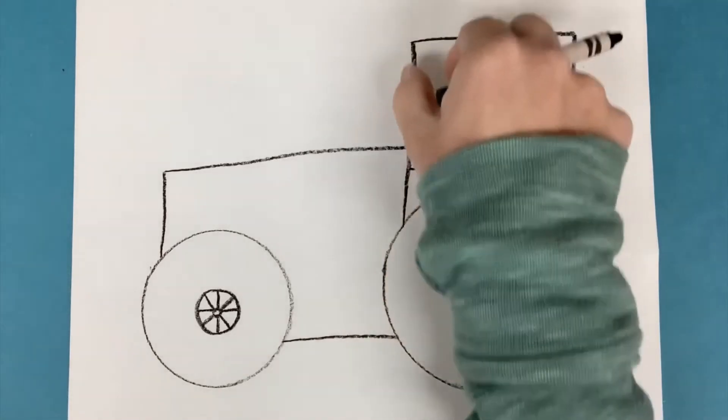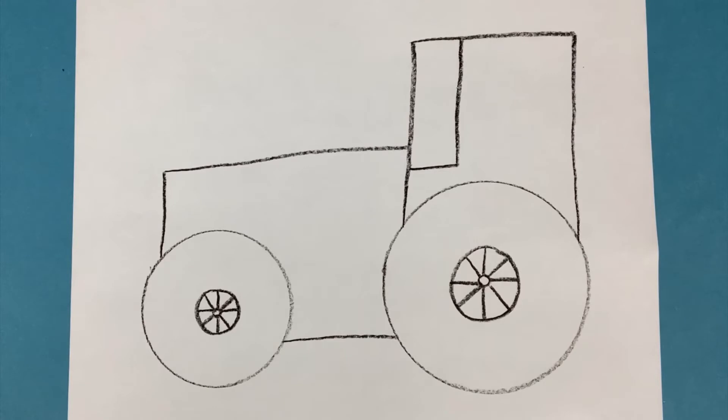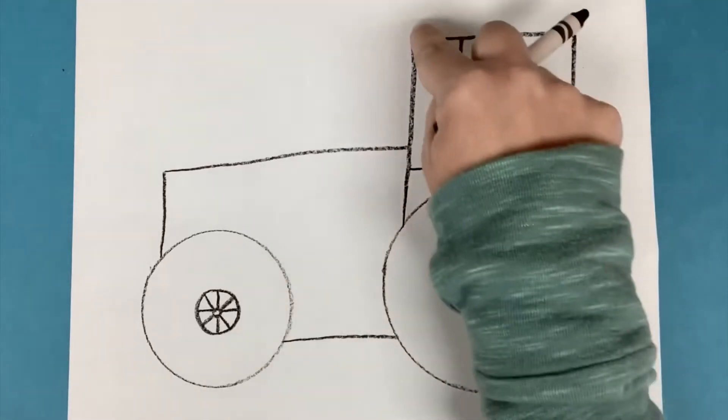And now I've got a window for the driver to see out of. And it looks like a skinny rectangle, right? It's got four sides and four corners. One, two, three, four.